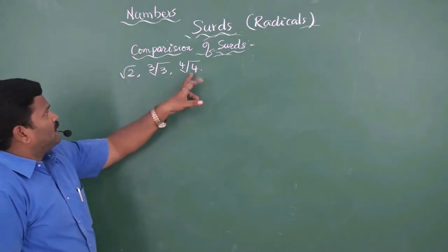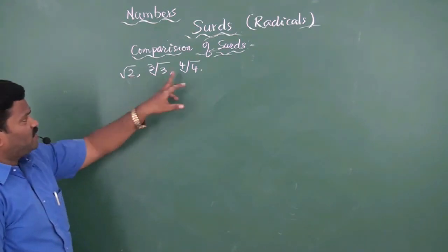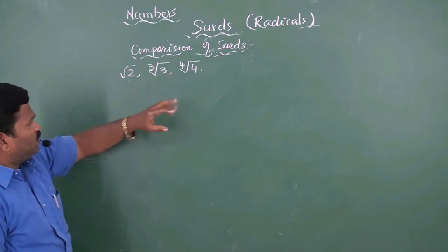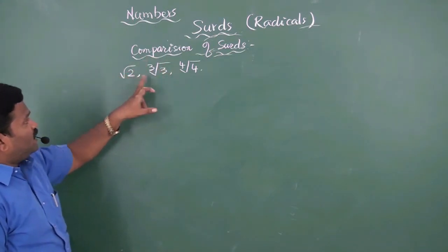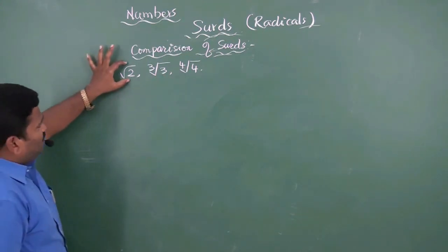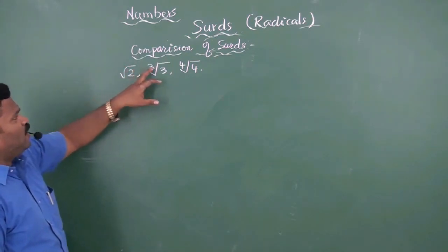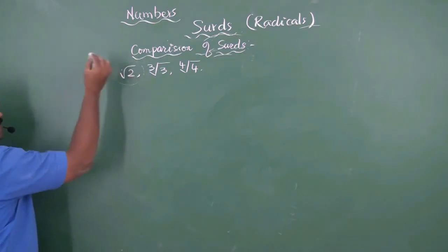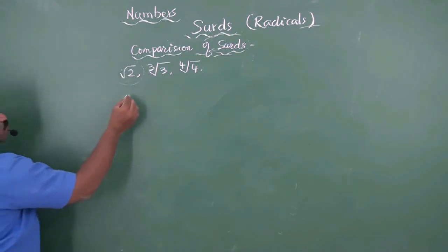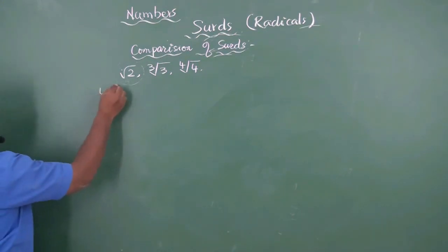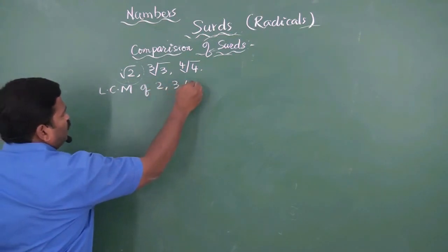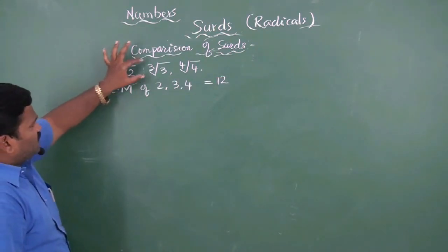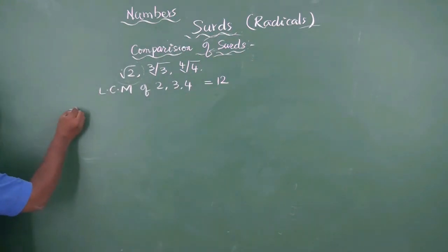In these three radicals, which is the smallest and which is the greatest? Since their orders are not the same and radicands are not the same, we make their orders equal by taking the LCM. The first radical is a square root — where no order is mentioned, the order is 2. Find the LCM of 2, 3, and 4, which equals 12. Therefore let us make the order of all three radicals as 12.